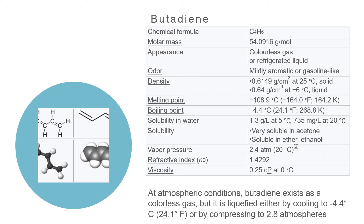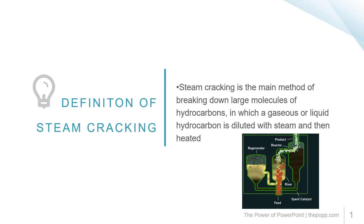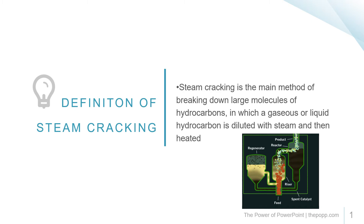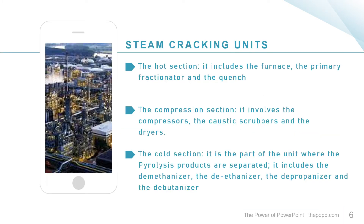Or by compressing to 2.8 atmospheres. Steam cracking is the main method of breaking down large molecules of hydrocarbons, in which a gaseous or liquid hydrocarbon is diluted with steam and then heated. There are three steam cracking units: the hot section, the compression section, and the cold section. The hot section includes the furnace, the primary fractionator, and the fans.